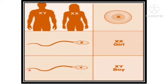If the sperm with Y chromosome fuses with the ovum containing X chromosome, then we get XY — that means a male child. This is the concept behind determining a female child and a male child.